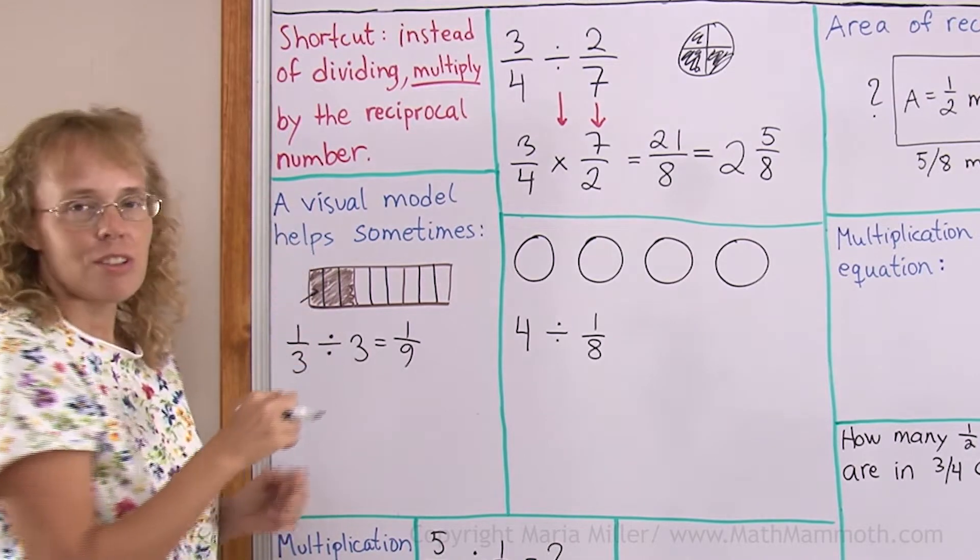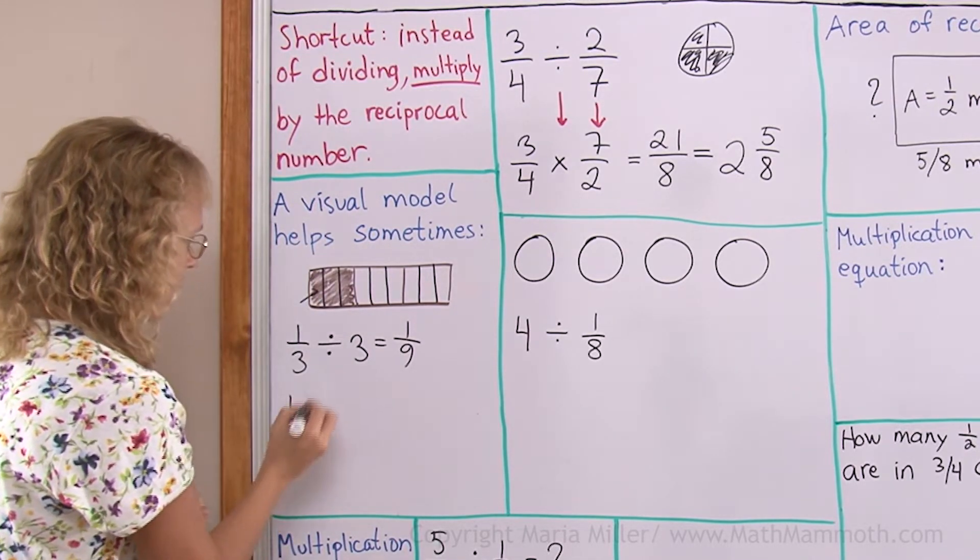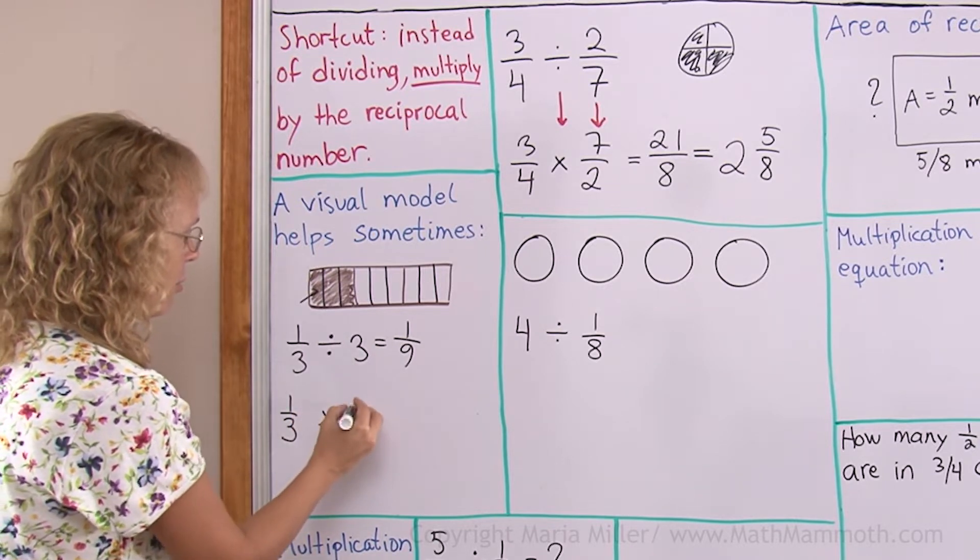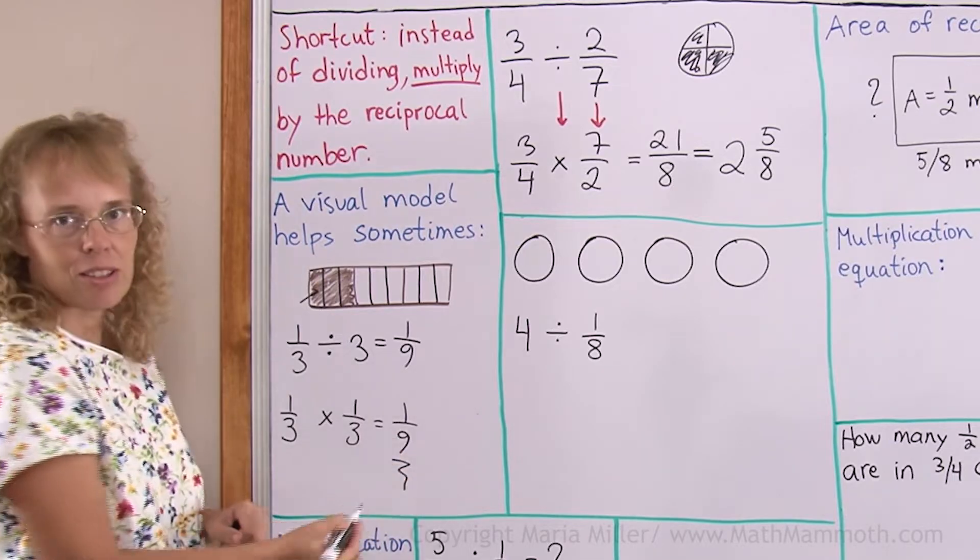Let's check though, would the shortcut work here too? If I use the shortcut, then I would change this into multiplication and 3, I would flip it to get 1/3. So yes, you would get the same answer that way too.